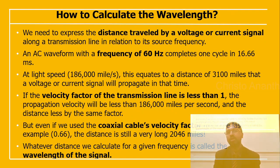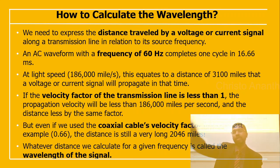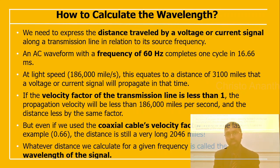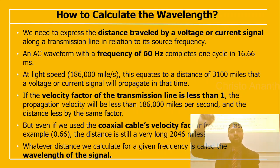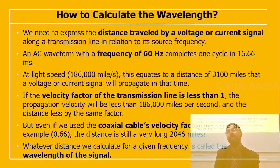To calculate wavelength, we express the distance traveled by the voltage or current signal along the transmission line in relation to the source frequency. An AC waveform with a frequency of 60 Hz will have one cycle in 16.66 ms. At the speed of light — 186,000 miles per second — the distance a voltage or current signal propagates in that time is 3,100 miles. If the velocity factor of the transmission line is less than unity, the propagation velocity and distance are reduced by that same factor.